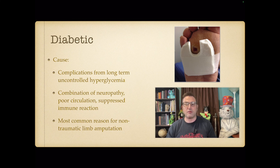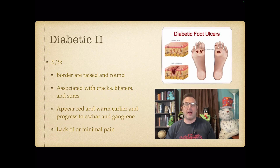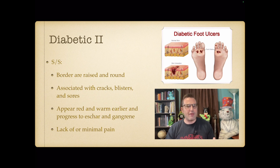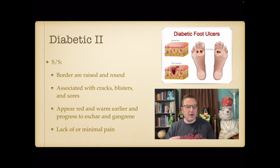Diabetic wounds are extremely hard to close once open. Signs and symptoms include a border that is raised and round, associated with cracks, blisters, and sores. Early on it appears red and warm, then progresses to eschar and eventually gangrene if untreated. There is little or no pain due to the neuropathy the patient has.